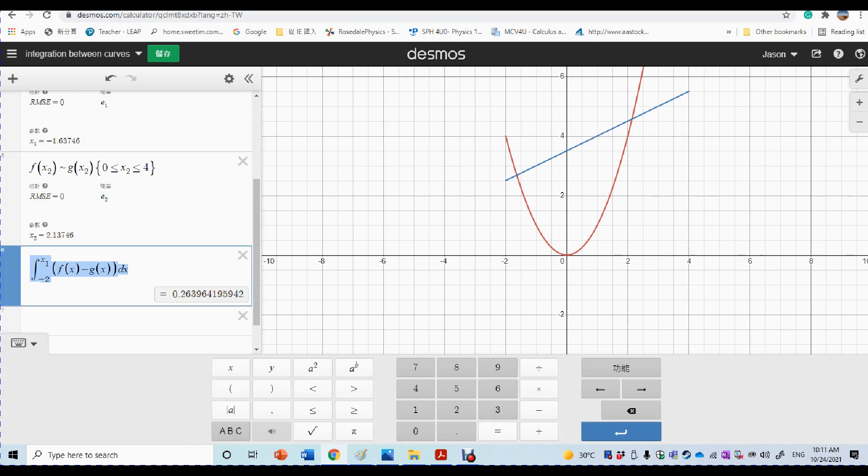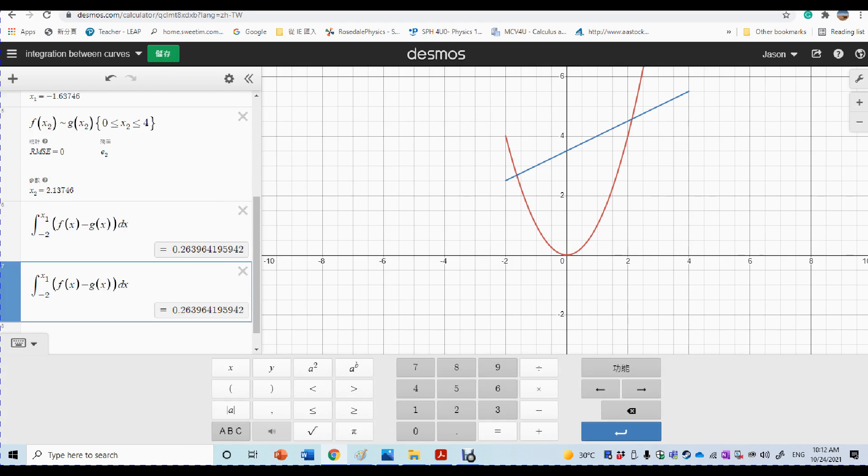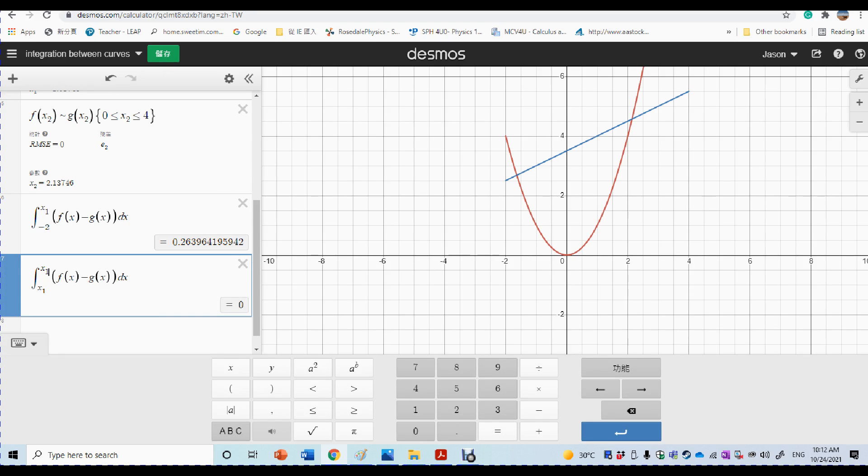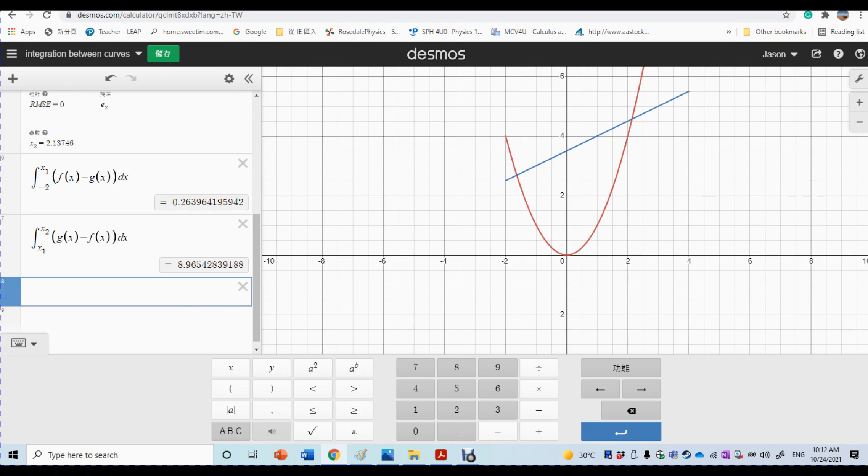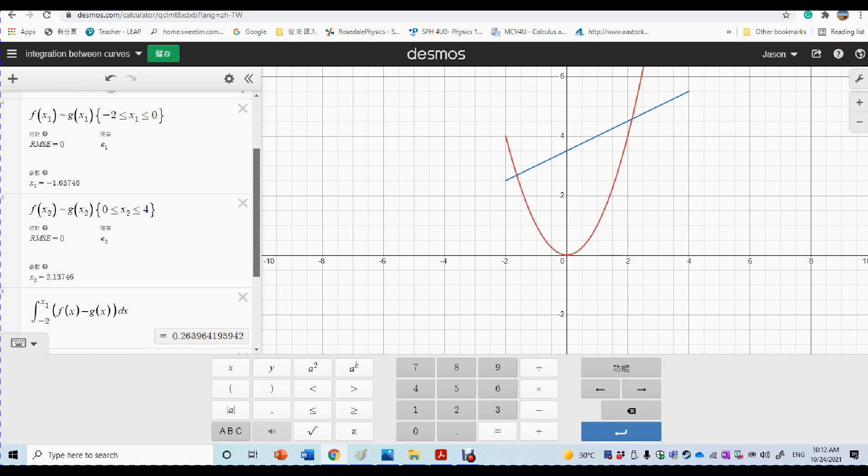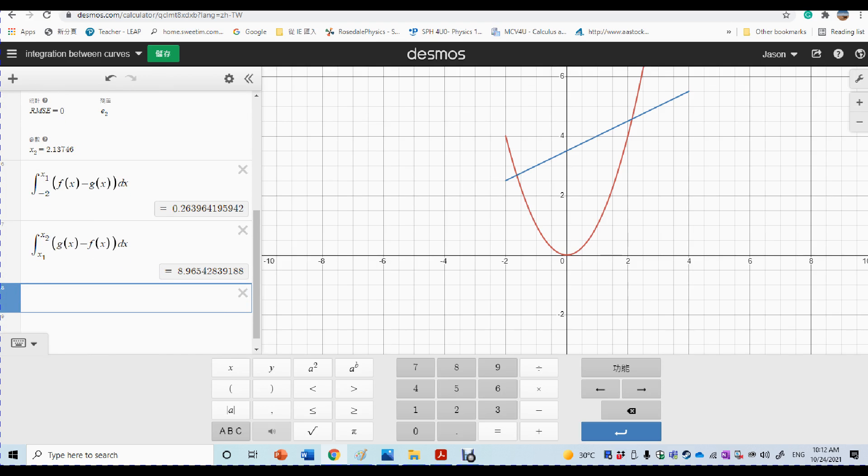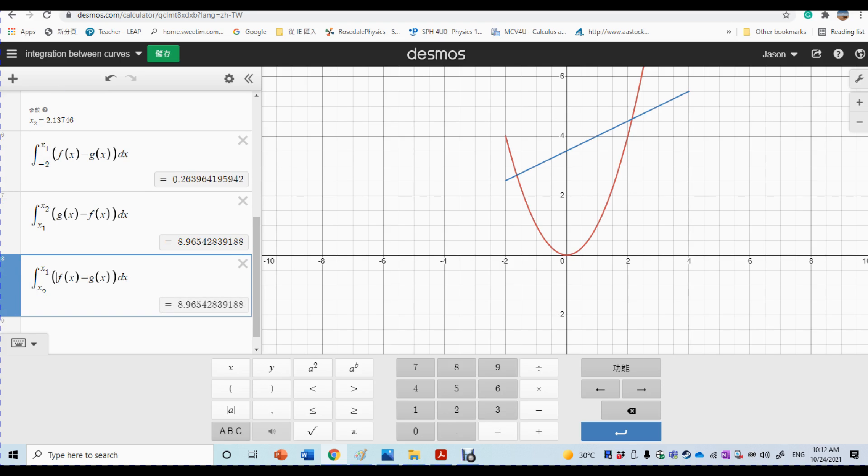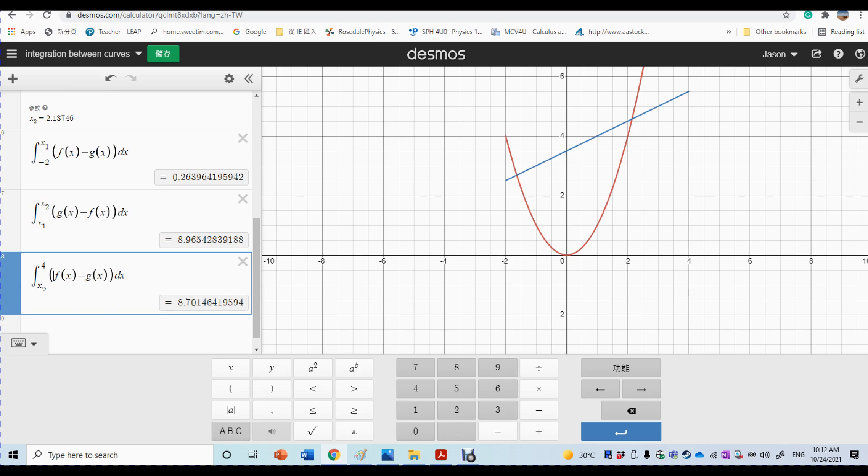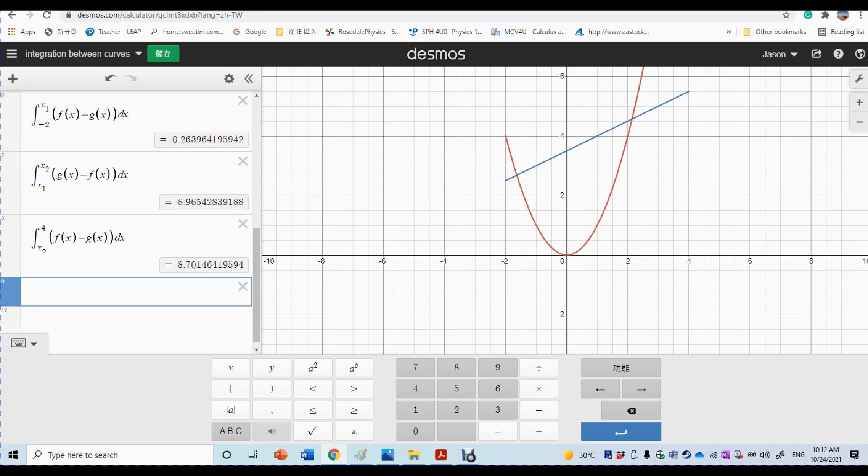So let's create the second one. So the second one is for x1 to x2. But this time I need to put g in front of x. So that's our second area, which is below the x-axis. And then I should have a third area. So third area should be from x2 to 4. And so that's another area.